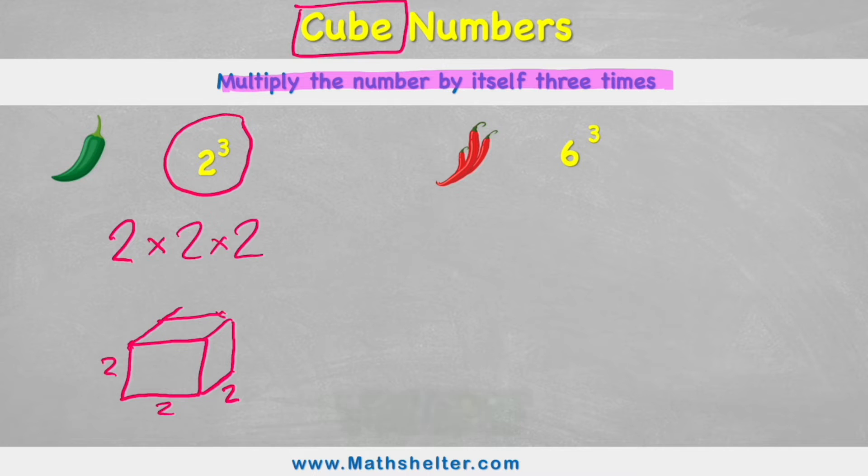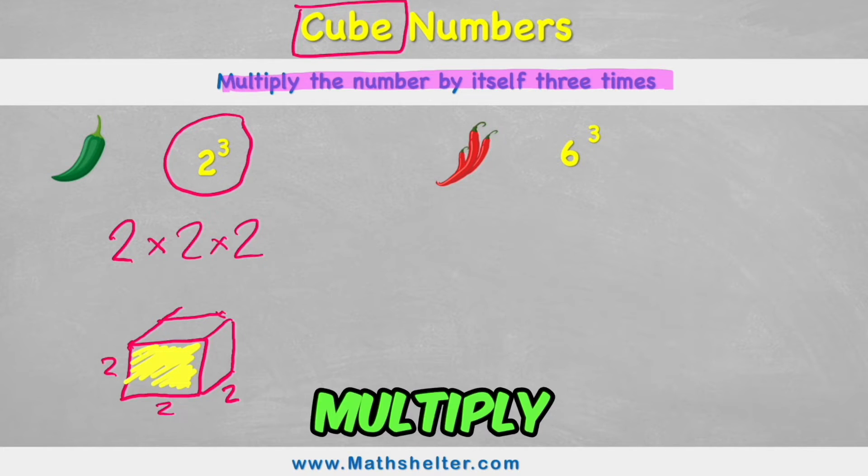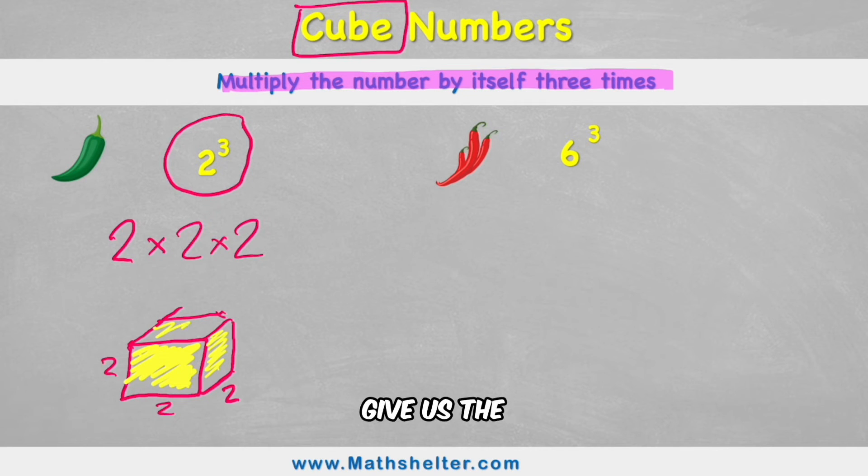So to find the volume of this cube, we're going to multiply two by two, which will give us the area of one of the faces. But to find its volume, we need to multiply it by another two, which will then give us the volume of this whole cube.